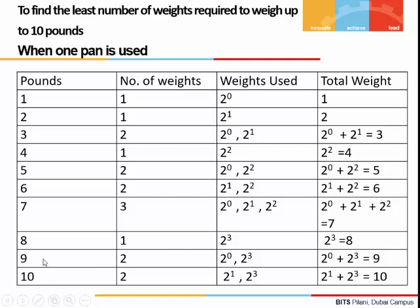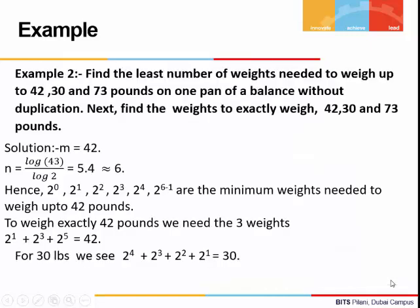For 9, two weights are needed: 2 to the power 0 and 2 to the power 3, adding to give 9 pounds. For 10, two weights: 2 to the power 3 and 2 to the power 1. When we put them in a pan, we get 10 pounds.